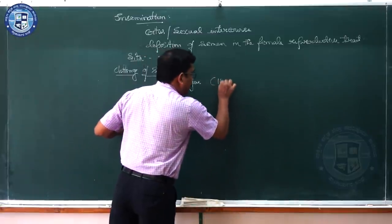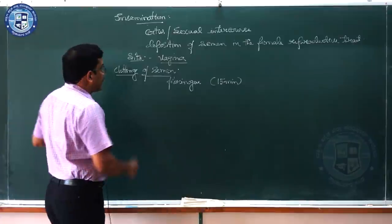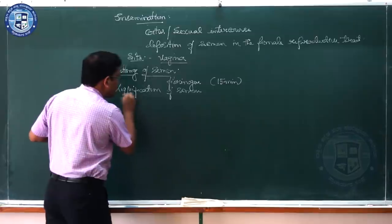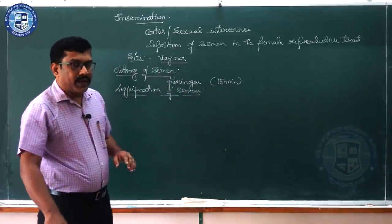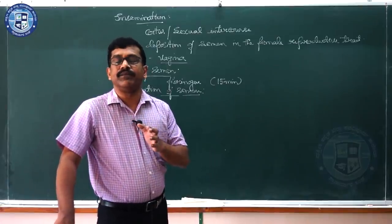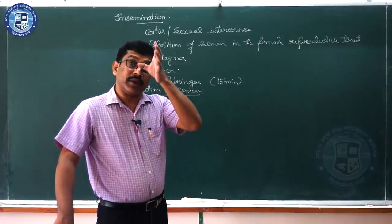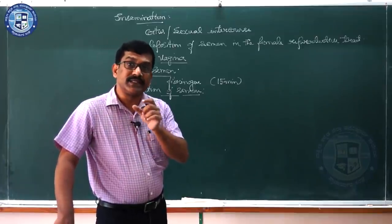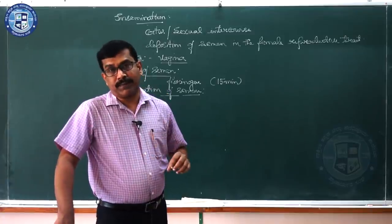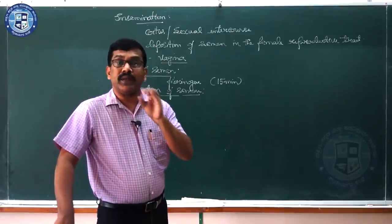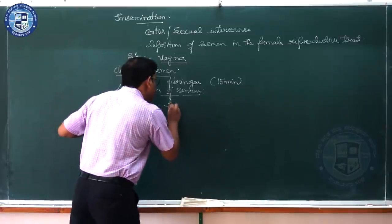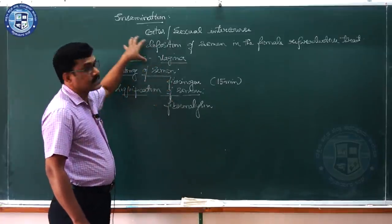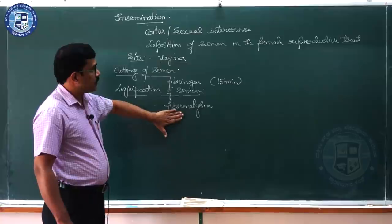After 15 minutes, liquefaction of semen takes place. The prostate gland, which encircles the male urethra and contributes around 40% of seminal plasma, contains a protein called fibrinolysin. The clotted semen undergoes liquefaction because of fibrinolysin.